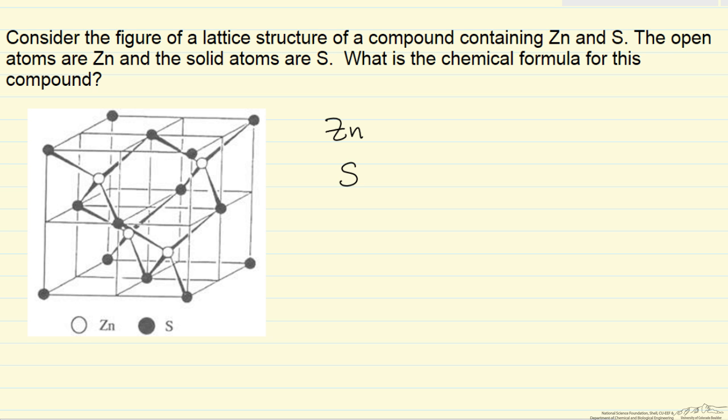Well let's do the easiest one first, the zinc. You notice these 1, 2, 3, 4, they're all within the structure. So there are 4 zinc atoms.